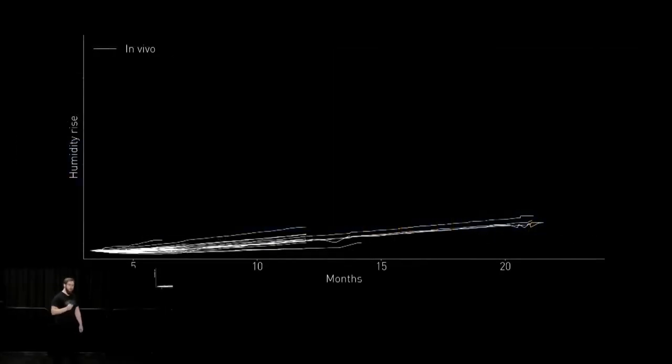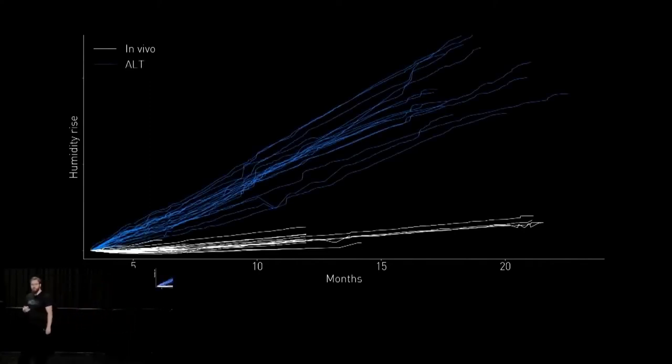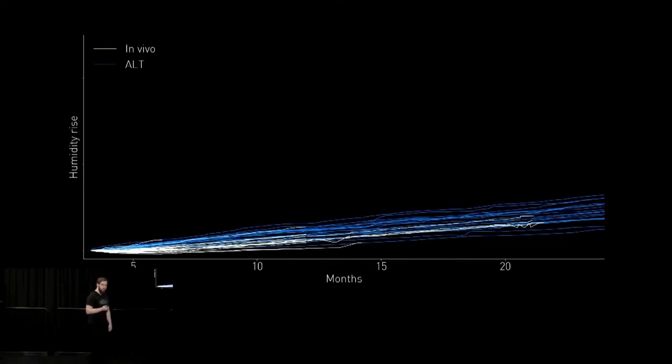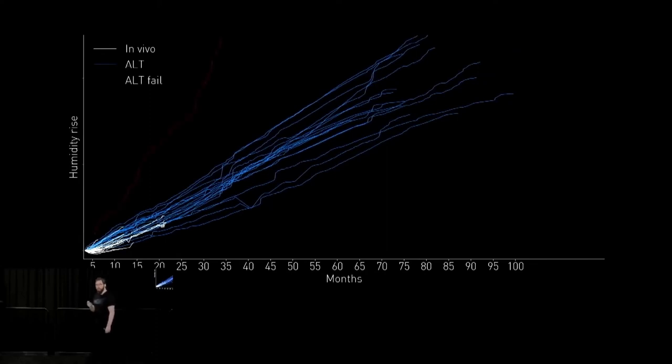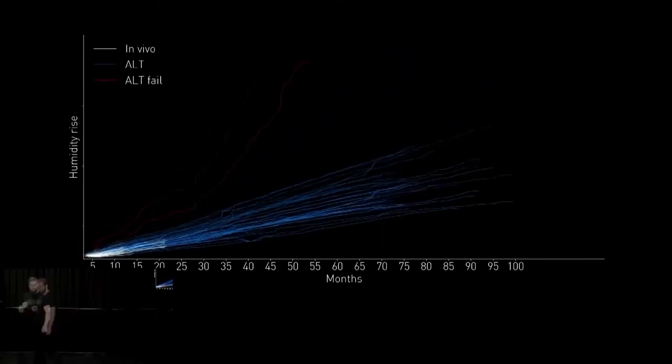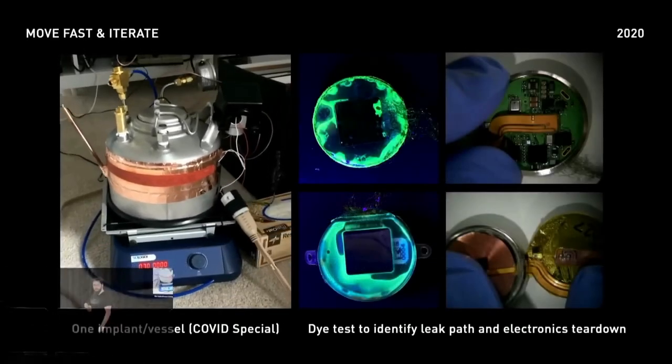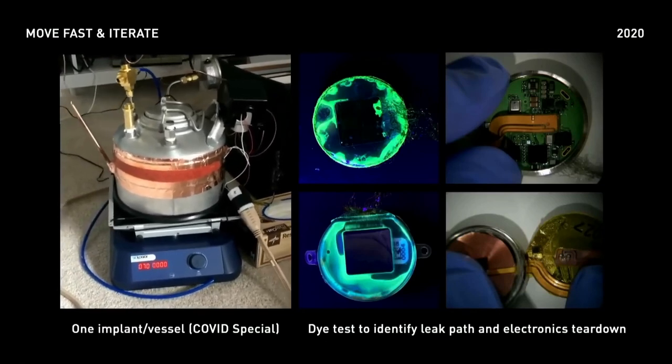As you can see, our internal humidity sensing is so sensitive, it can even detect the very small and slow humidity rise just from diffusion through our implant materials. Now, in blue, you can see that same internal humidity data, but from devices in our accelerated system. If we adjust this data for our acceleration factor, you can begin to see not only the agreement in this data, but also just how far into the future this data extends. Now in red, you can see a device which has failed in our accelerated system. This device showed an abnormal increase in humidity over the duration of many months before implant electronic failures occurred.